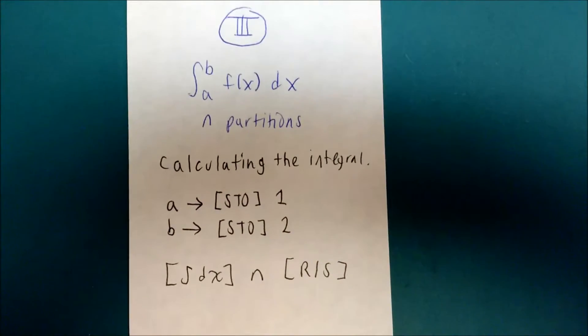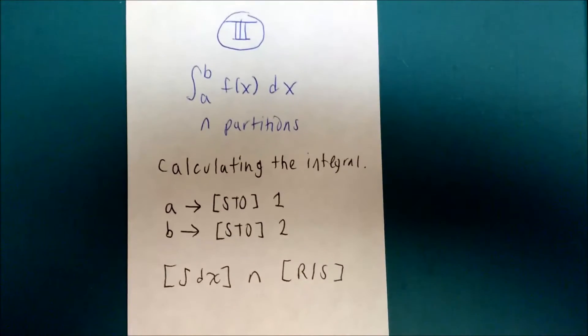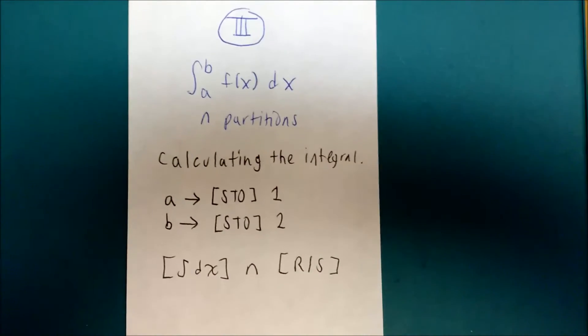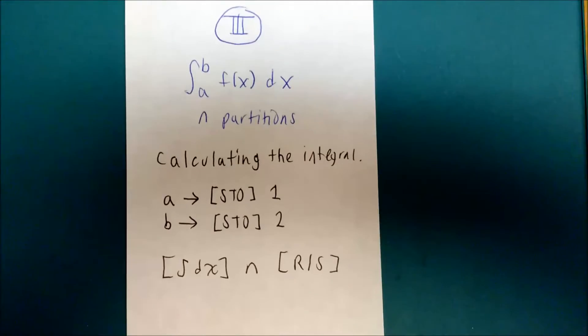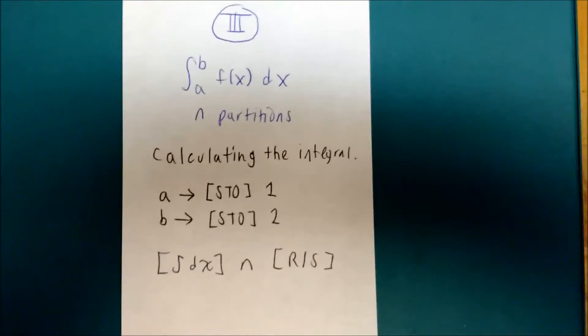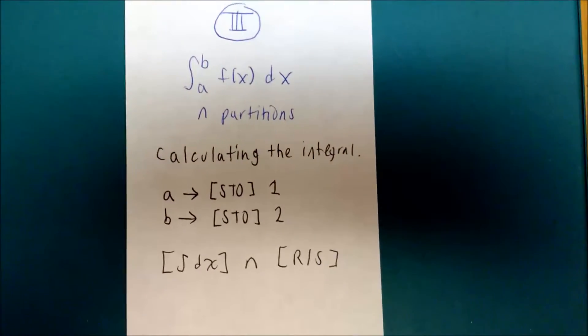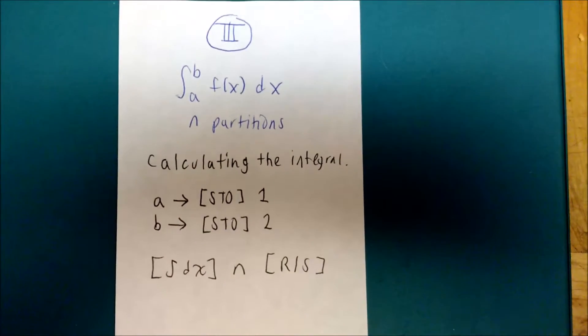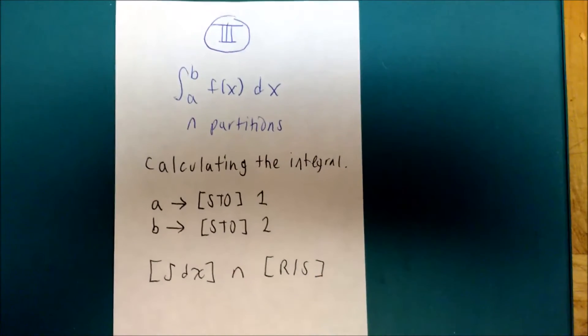To calculate this integral, you're going to store the lower limit, or A, in register 1, the upper limit, B, in register 2. Then you're going to press the integral key, and then the number of partitions, which is anywhere from 1 to 99, and press run-stop.